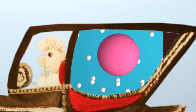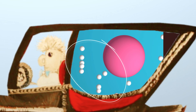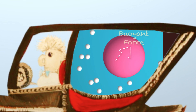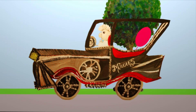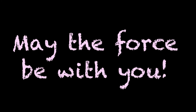Brilliant! And the opposite happens when the car slows down. The molecules are piled up on the bottom of the car because of gravity, but at the front of the car because of car deceleration and air inertia. As a result, the direction of the buoyant force changes and the balloon moves towards the back. Okay, I get it! Inertia causes air to pile up, changing the direction of the buoyant force. Splendid!